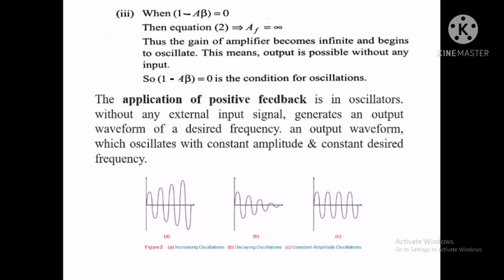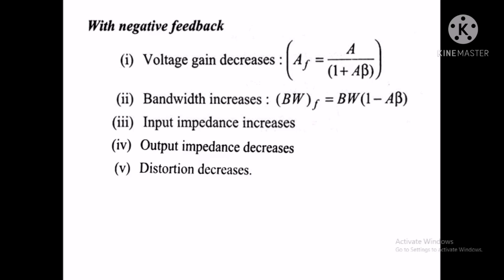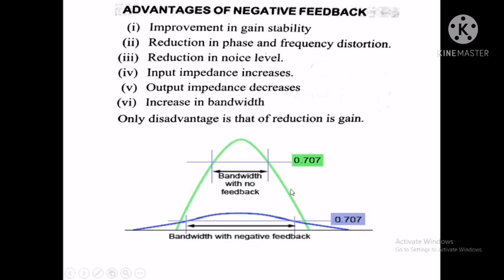Positive feedback is always used for oscillation in the amplifier. With negative feedback, the voltage gain decreases: Af equals A upon 1 plus A beta, and bandwidth increases. Input impedance increases, output impedance decreases, and distortion decreases. The advantages of negative feedback include improvement in gain stability, reduction in phase and frequency distortion, reduction in noise level, increased input impedance, decreased output impedance, and increased bandwidth.